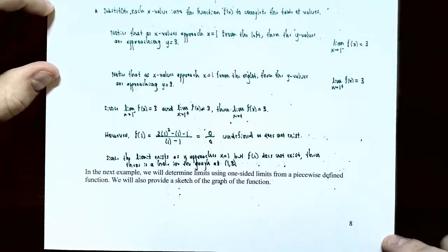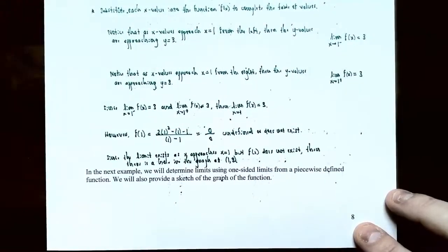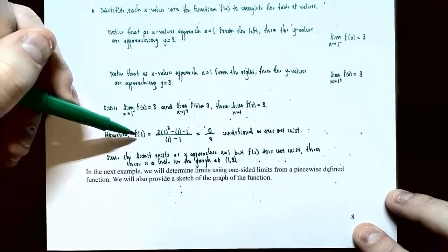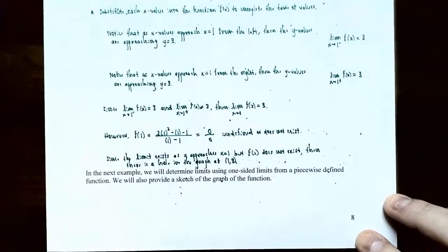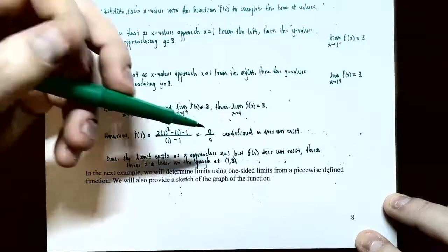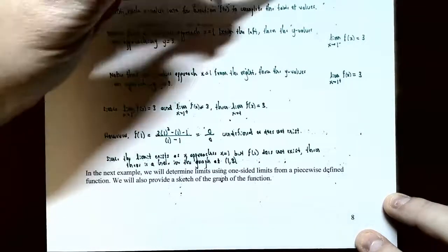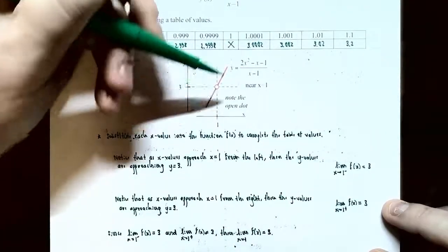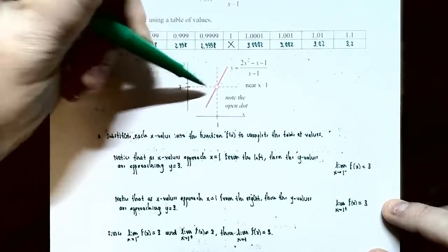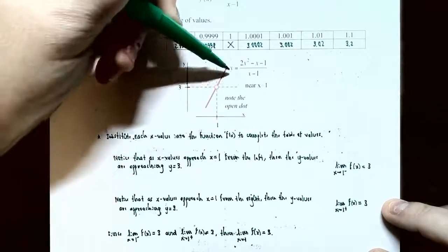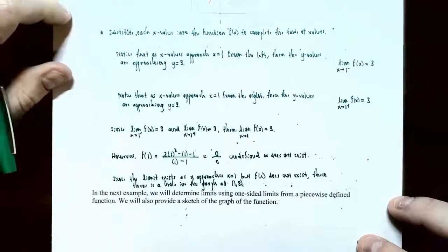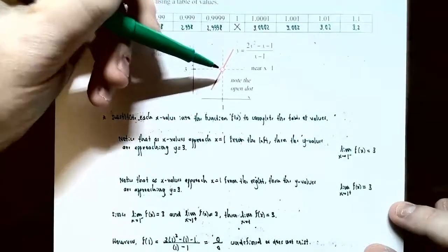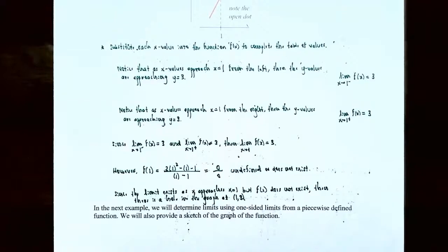We're not interested in what's happening at x equals one. If you plug in one, you get zero divided by zero — that's undefined. Since f(1) is undefined, there is no point there, meaning there's a hole in the graph. Here's what the graph looks like: approaching from the left, y values approach three; approaching from the right, y values also approach three. The limit exists and equals three, but there is no point at x equals one — it's a hole in the graph.